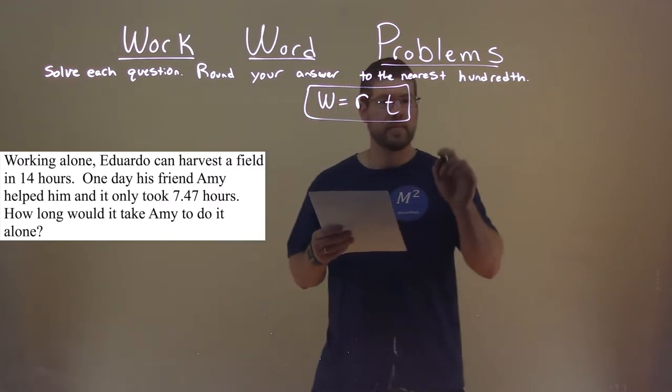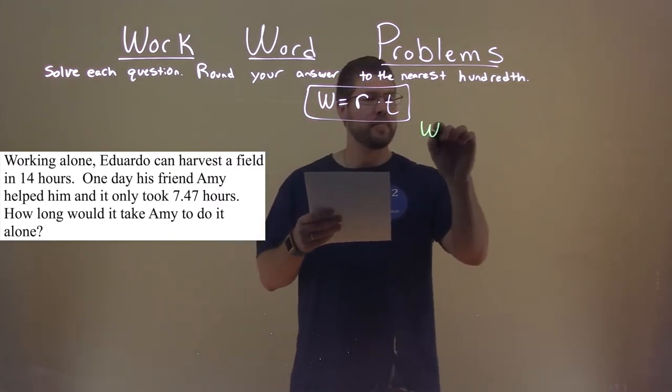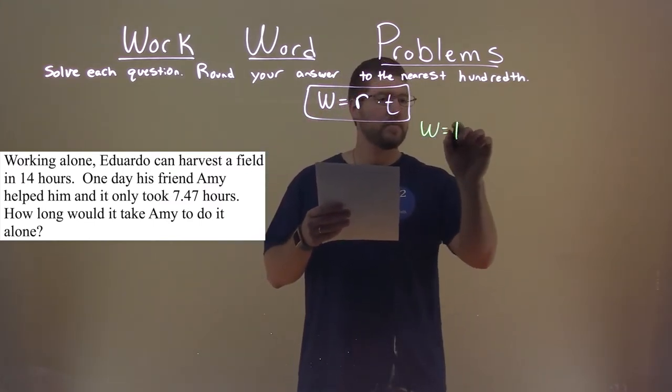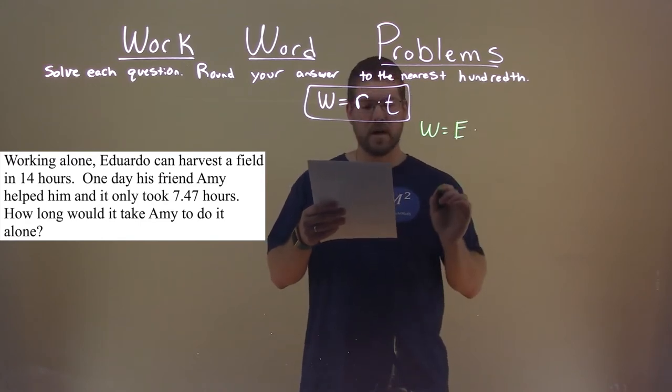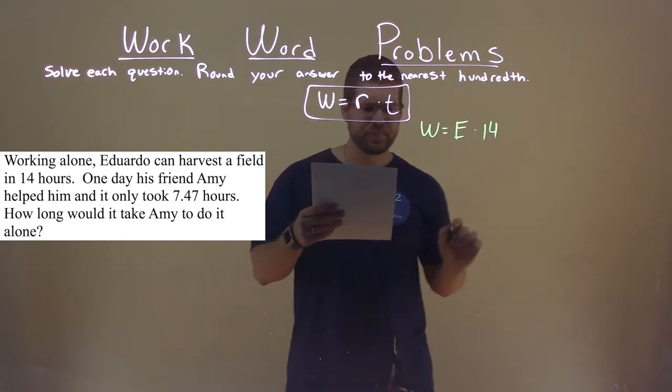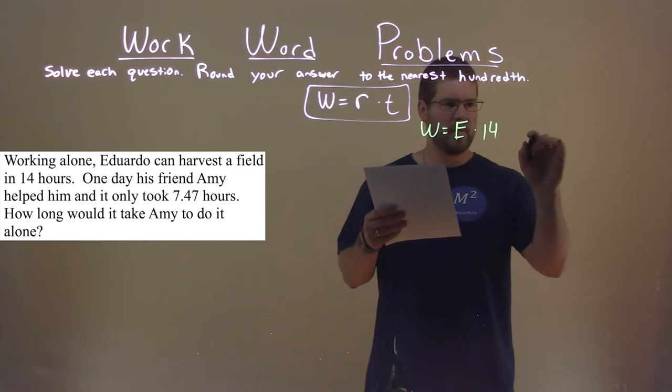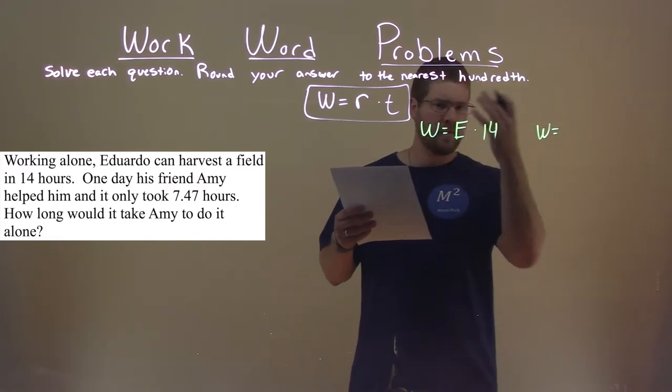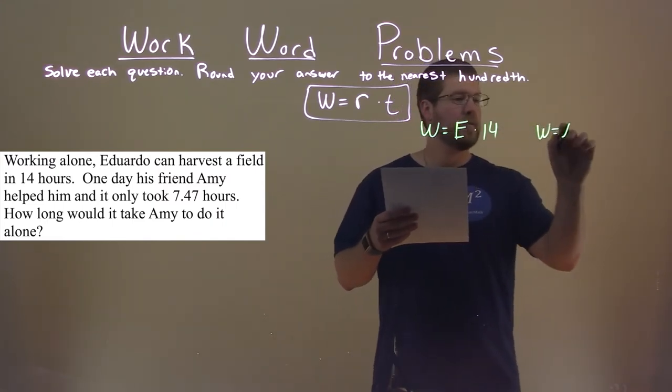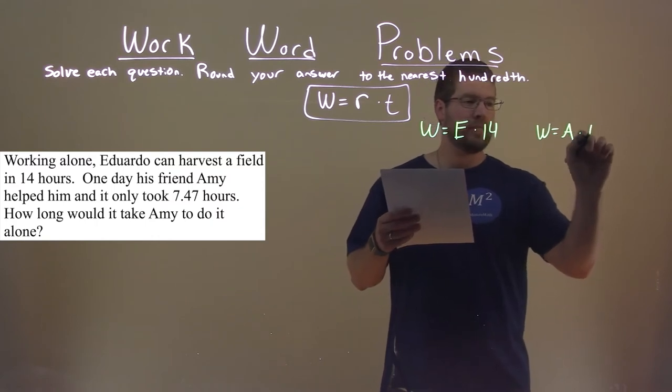Well, what do we know here? The work of harvesting a field takes Eduardo, so whatever his rate is, times 14 hours. We don't know much about Amy, so her work, whatever it is, of harvesting a field is equal to Amy's rate times her time.